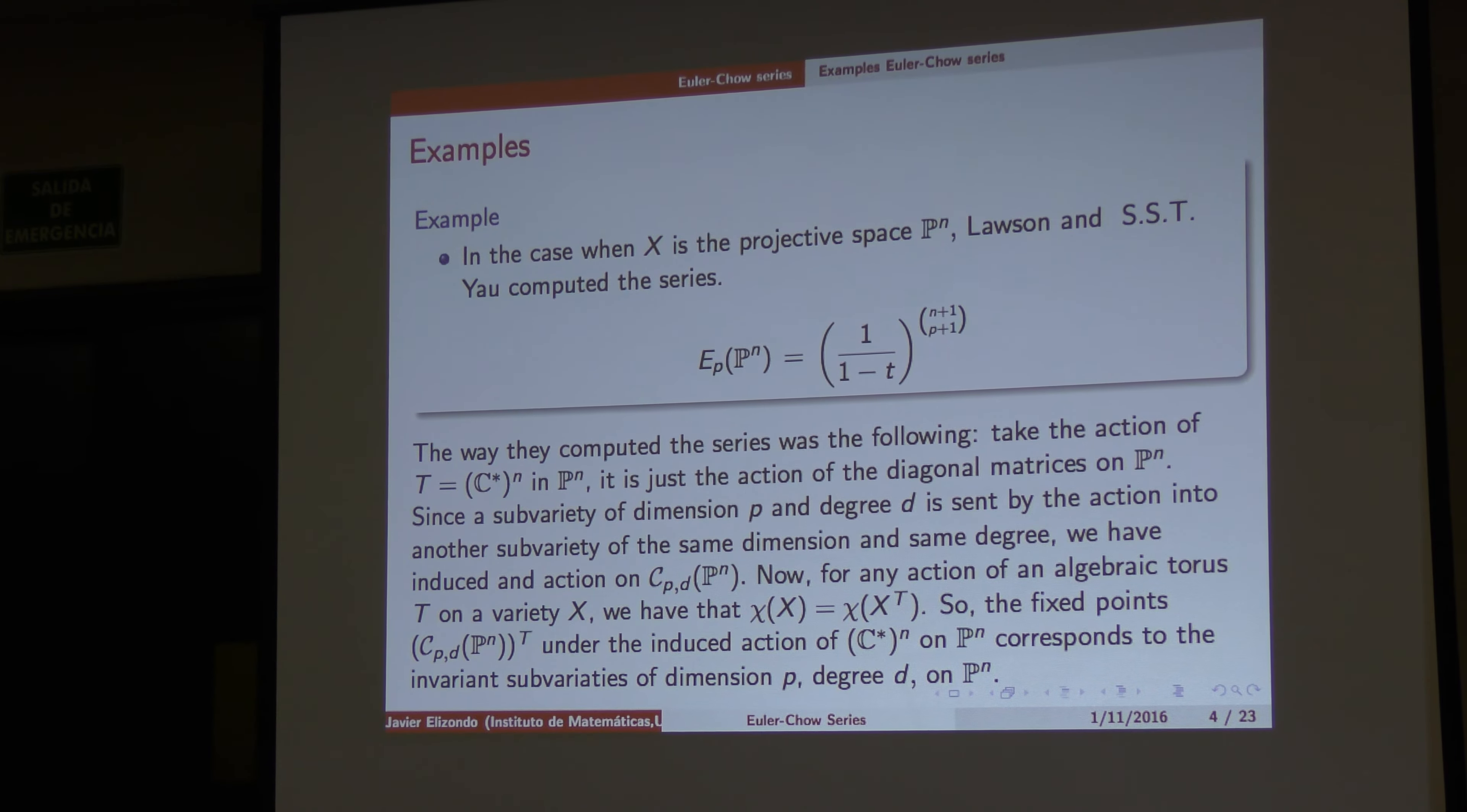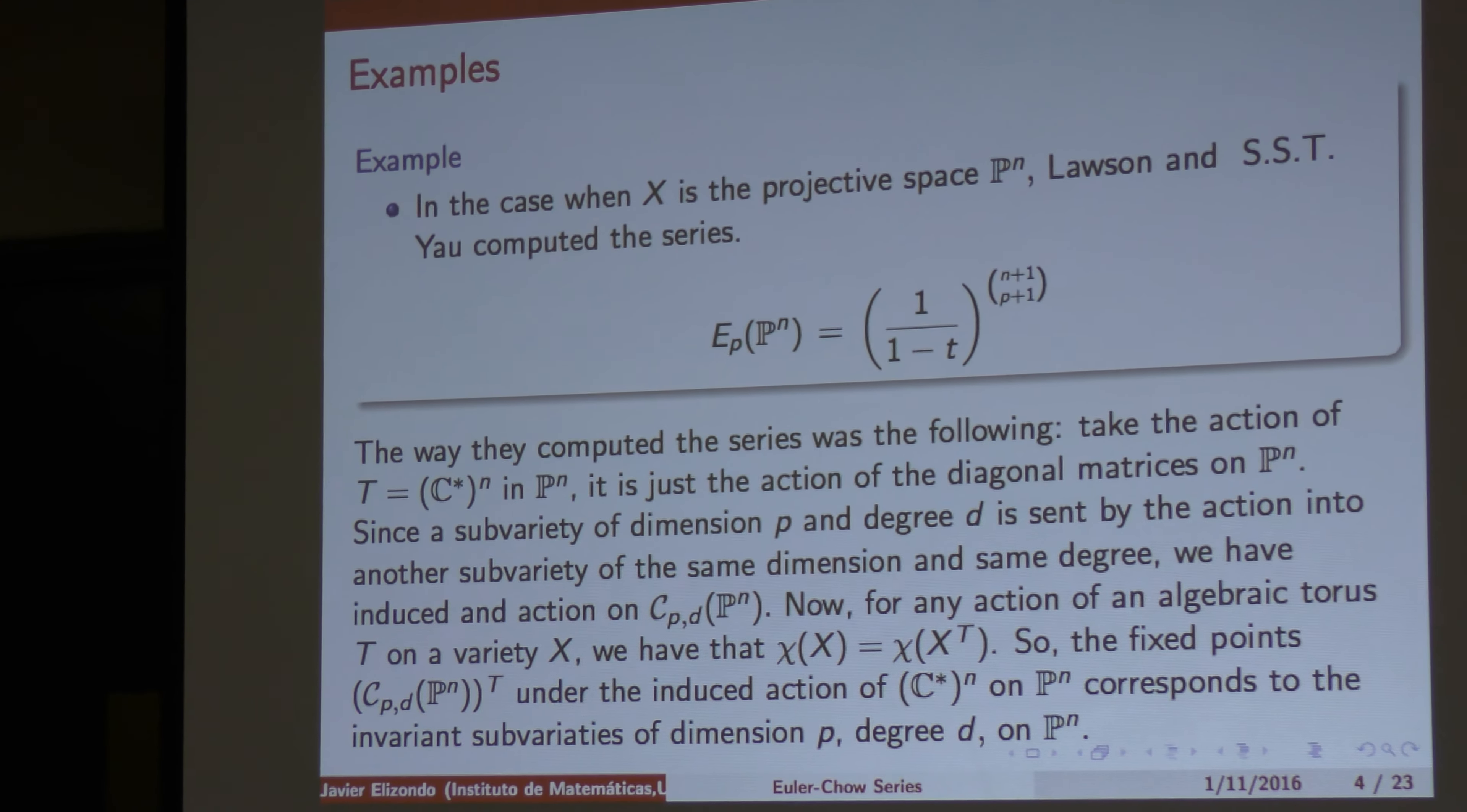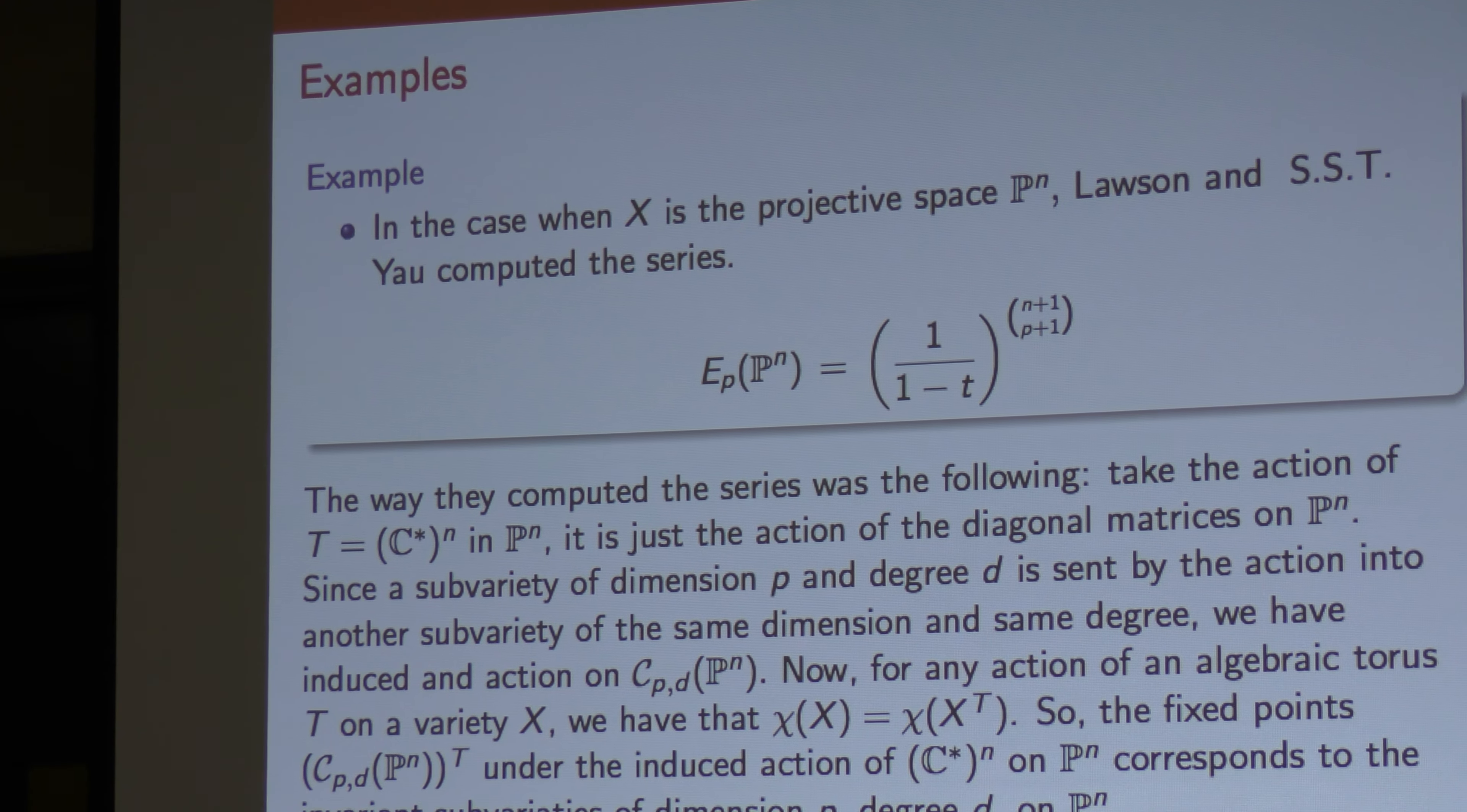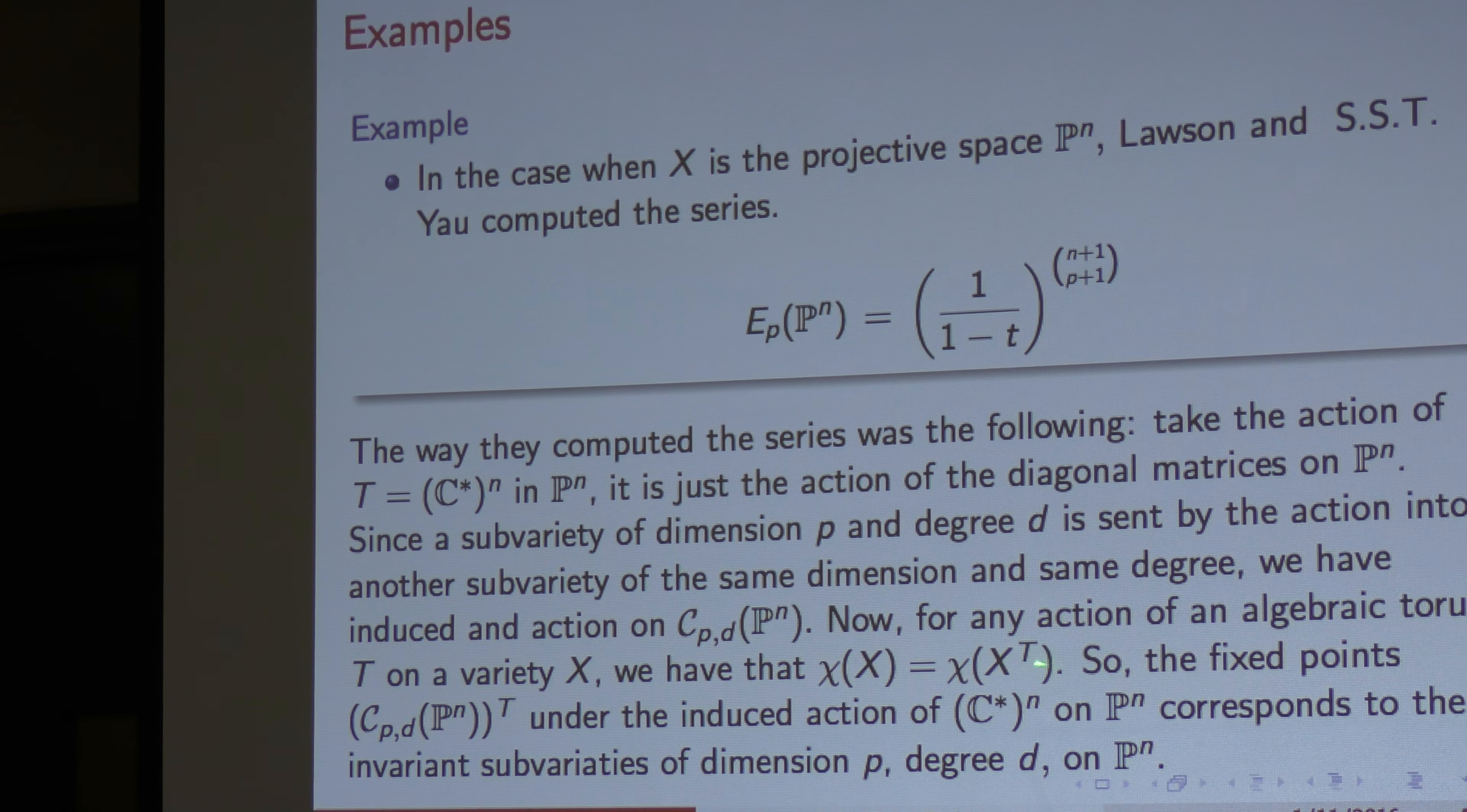How did they compute this one? You have a torus action in the projective space. So, you have the diagonal matrices acting there. Varieties of dimension P and degree D under these actions goes to another variety of dimension P and degree D. And therefore, induce an action in the Chow of X. And if something is invariant under the action, then you got its points in the Chow of X.